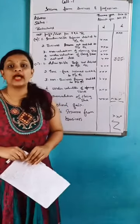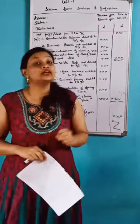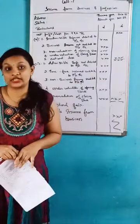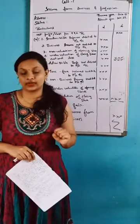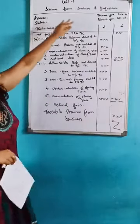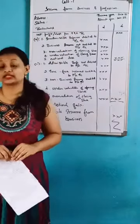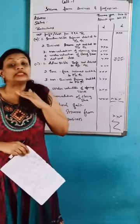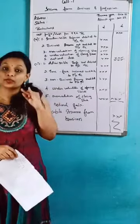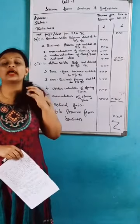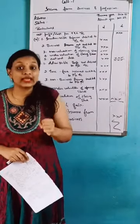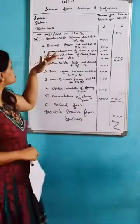Hello everyone. Today I am going to take a new chapter. The chapter name is income from business and professions. You have already studied the five heads of income. The third head is income from business and professions. In the last class I already explained the theory part — the business format, professions, meanings, everything and the percentages. Now once again I will revise the business format.